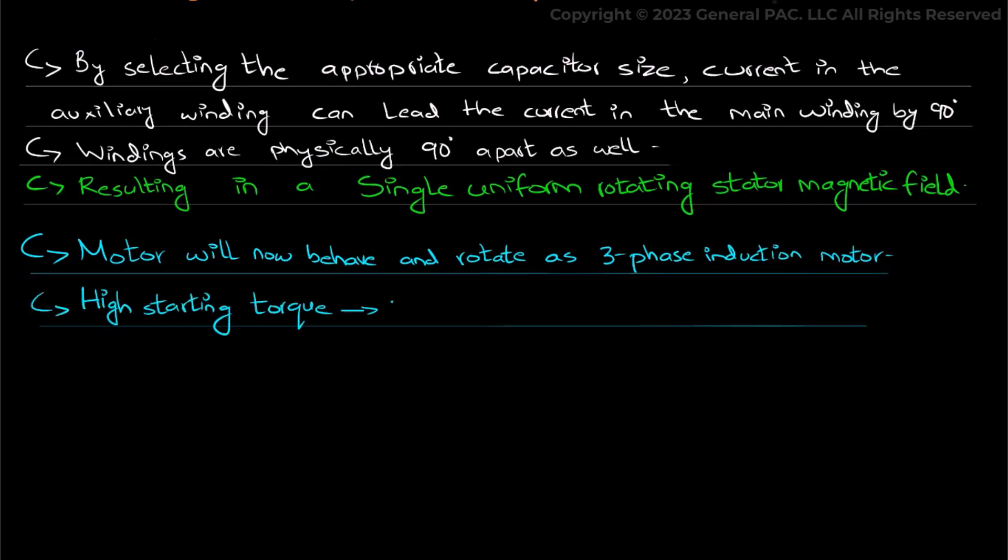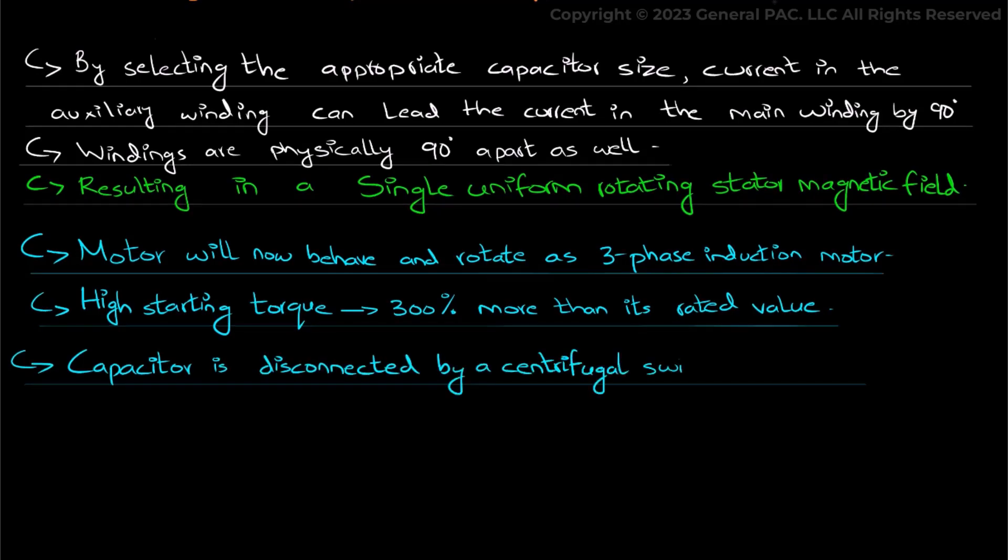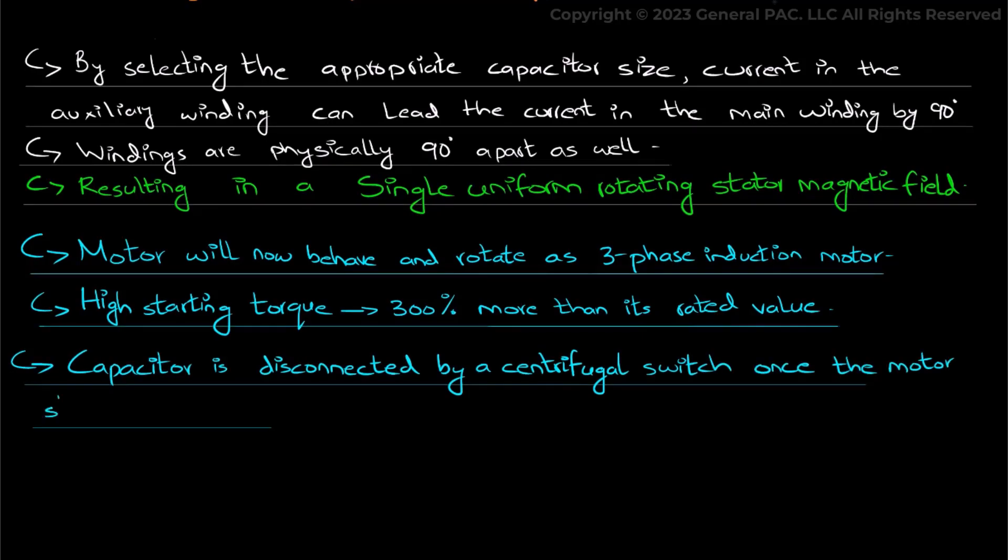And can have high starting torque up to 300% more than its rated value. And the capacitor is then beautifully disconnected by a centrifugal switch once the motor starts running. And this is the underlying principle behind a capacitor start motor.